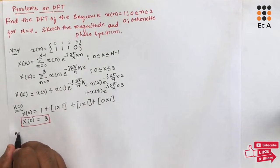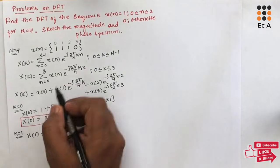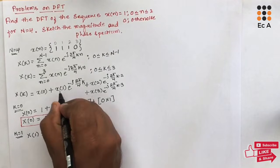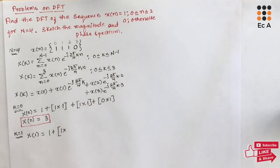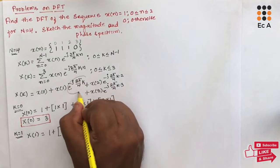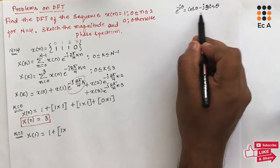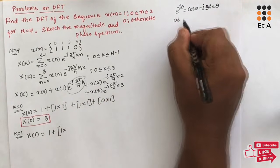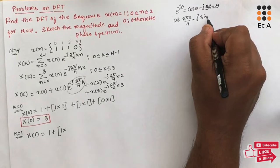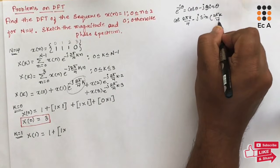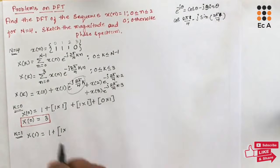Now let us put k = 1. X[1] = x[0] + x[1] * e^(-j2π/4) + x[2] * e^(-j2π*2/4) + x[3] * e^(-j2π*3/4). To evaluate these exponential terms, we use the formula e^(-jθ) = cosθ - j sinθ. Using this, we write cos(2πk/4) - j sin(2πk/4) and substitute k = 1. Let us calculate this using the calculator.